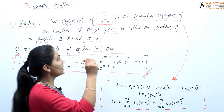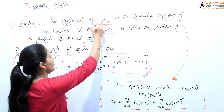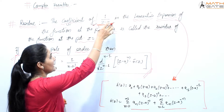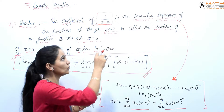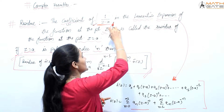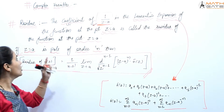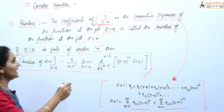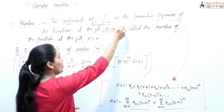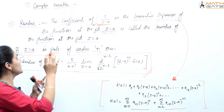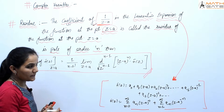The definition of residue is: residue is the coefficient of 1/(z−a) in the Laurent expansion of the function at the point z = a. This coefficient is called the residue of the function at that point z = a.